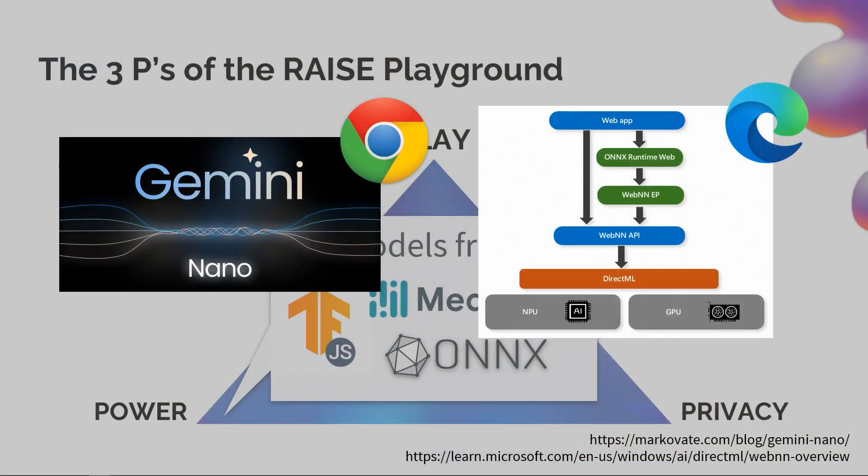Google and Chrome have announced they're going to start enabling access to Gemini Nano — one of their small but very powerful large language models — right in the browser. We're really excited to start exploring that. The Edge browser in Microsoft is also exploring a standard called Web Neural Network to increase the ability to run models directly in the browser.